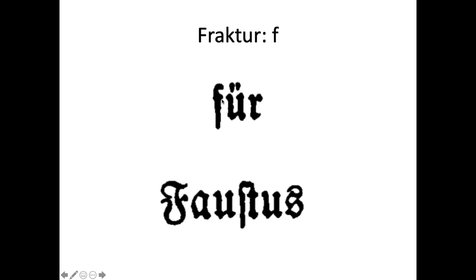The lowercase F takes quite a bit of getting used to, especially when it's near an S. So here's 'für' — F, U, umlaut, R — and you can see in the mid-19th century we're getting to our regular umlauts as well. The little knob on the front of the F is very important — if it weren't there, it would be an S. Look in 'Faustus' — 'für Faustus' — that S and that F distinguished only by a tiny knob.